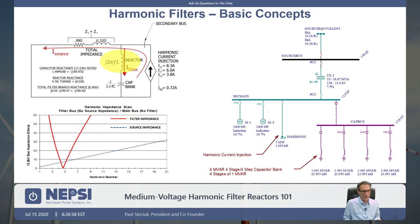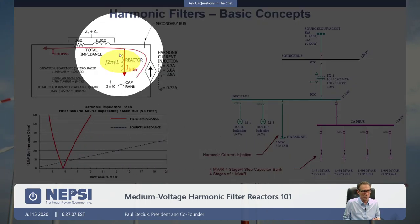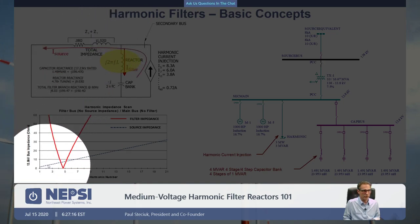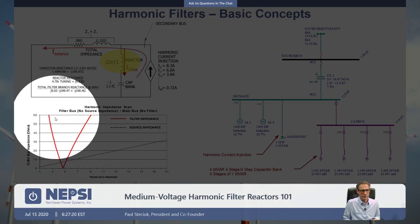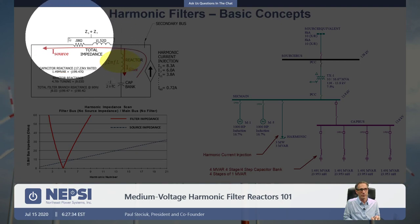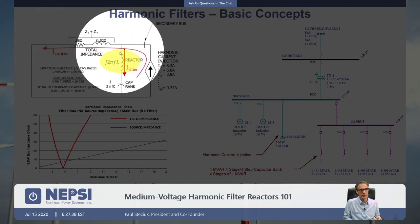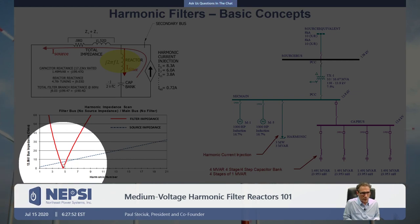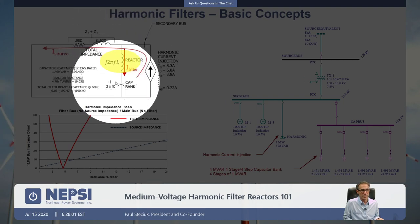Zooming in to the harmonic impedance plot, you see the impedance curve for the harmonic filter. We're looking at the impedance down into the capacitor bank — which includes the reactor and the capacitor — versus the impedance of the source, which is a straight line. When you install a filter on a system, the filter will take harmonic current from the source based upon an impedance current divider between the source/transformer impedance and the filter impedance. At the fifth harmonic, the filter may have an impedance of about five ohms and the source about seven ohms.